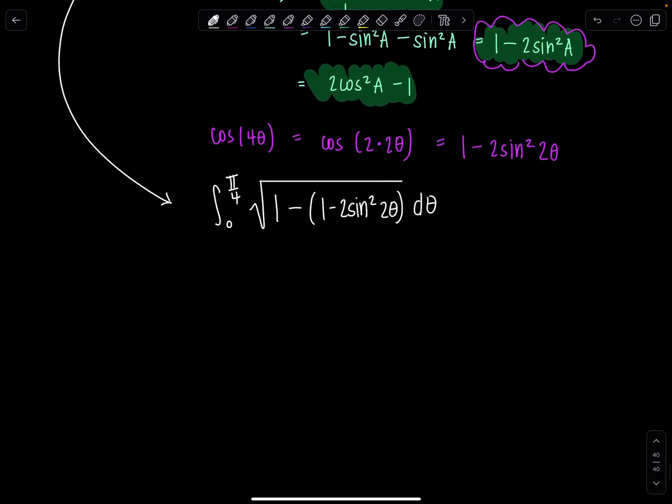Okay, beautiful. So, now the 1s cancel out, right? If I distribute that negative. And then I'm going to have radical 2sin²2θ dθ. Excellent. I can break up that radical. So, it's 0 to π/4 square root of 2. And then square root of sin²2θ is absolute value sine 2θ dθ.